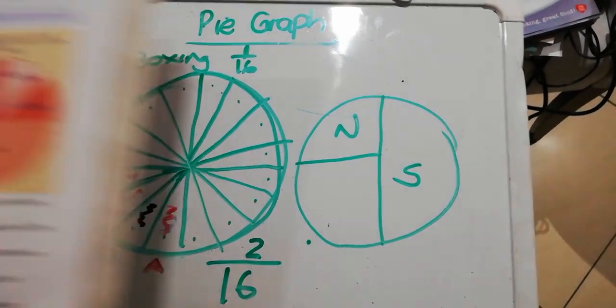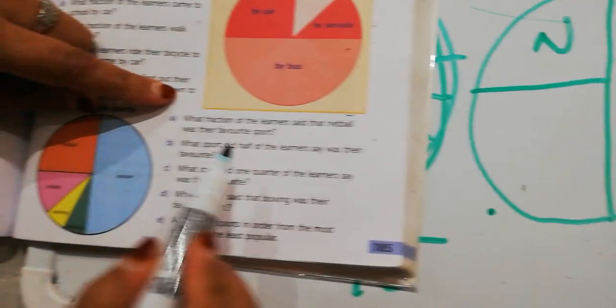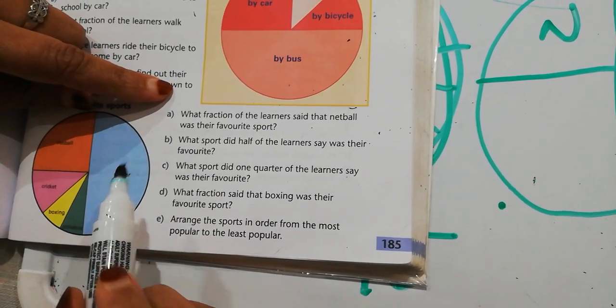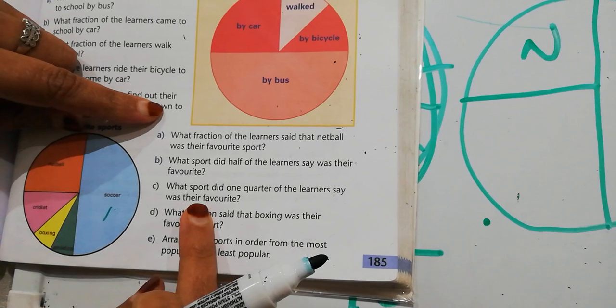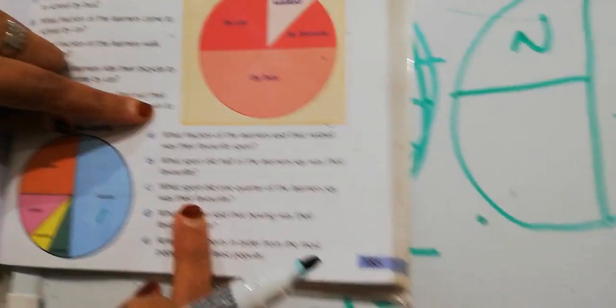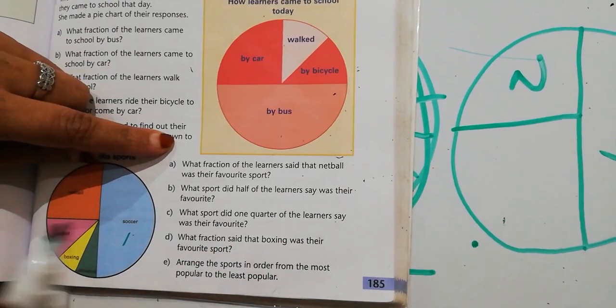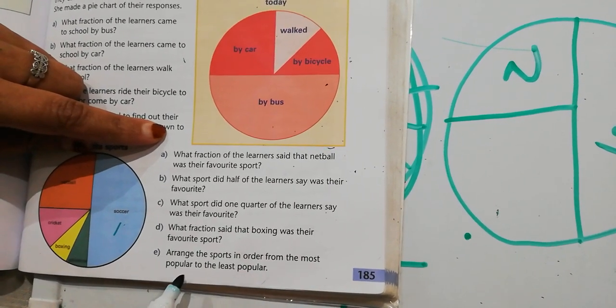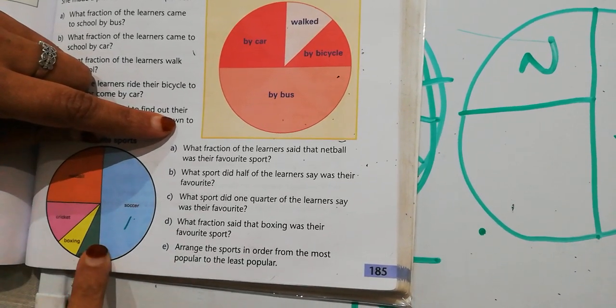Now let's go to the questions. What fraction of the learners said that netball was a favorite sport? Easy to identify. What sport did half of the learners say was a favorite? Easy to identify. What sport did one quarter of the learners say was a favorite? Quarter is 1 over 4. What fraction said that boxing was a favorite sport? So I showed you on the whiteboard how to figure out what fraction. And then arrange the sports in order from the most popular to the least popular. We're obviously looking at the graph. We can see most popular to least popular.